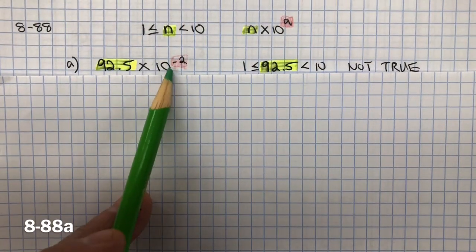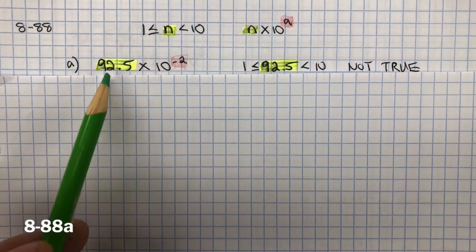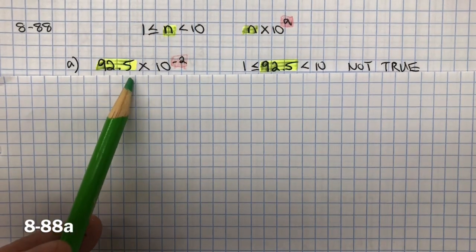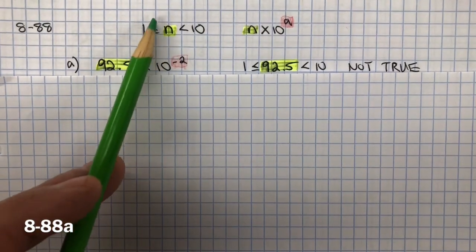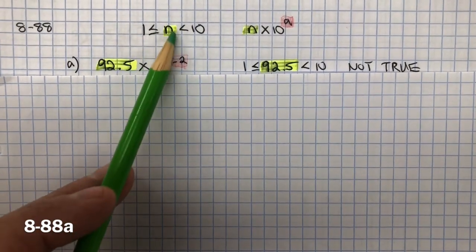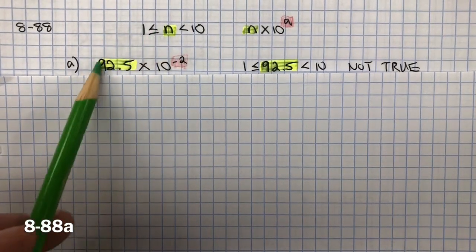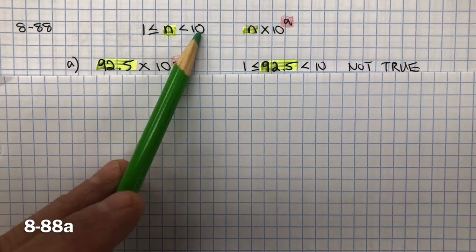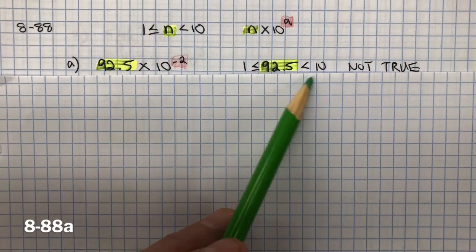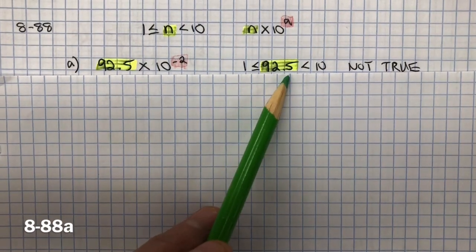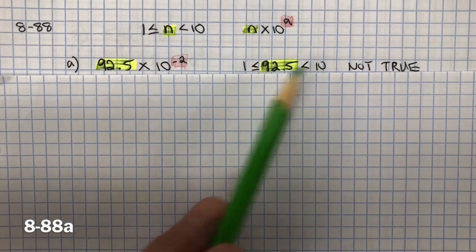For the first one, 10 to the negative second power — that works, that's an integer. But if we look at 92 and 5 tenths, that doesn't meet the requirements. This number has to be greater than or equal to 1, which it is, but it also has to be less than 10, which it isn't. So this is not in scientific notation — it's greater than or equal to 1 but not less than 10.